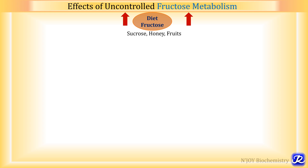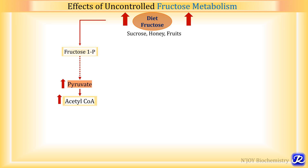Now let's see the effects of uncontrolled fructose metabolism — if we consume excess fructose it leads to various harmful effects. When there is high dietary fructose from sucrose, honey or fruits, there will be formation of more fructose 1-phosphate, leading to increased concentration of pyruvate in the body, because one of the fates of fructose metabolism is formation of pyruvate.